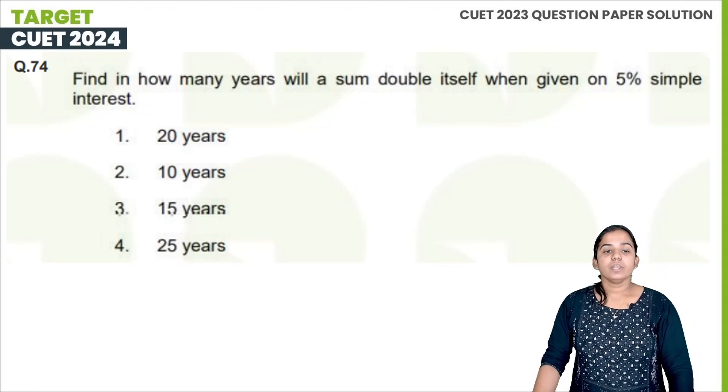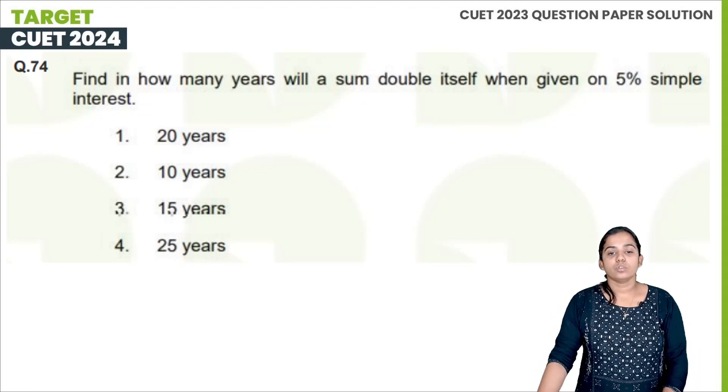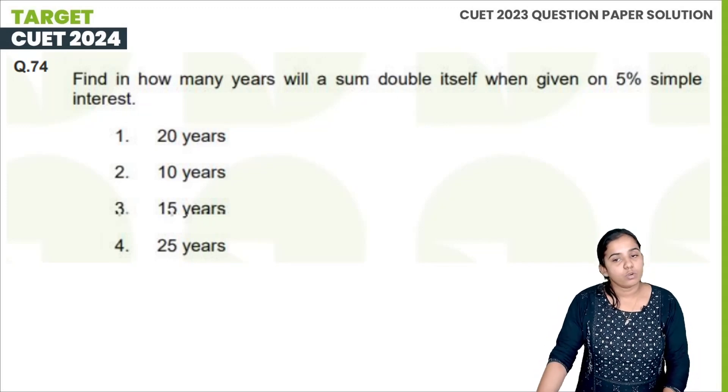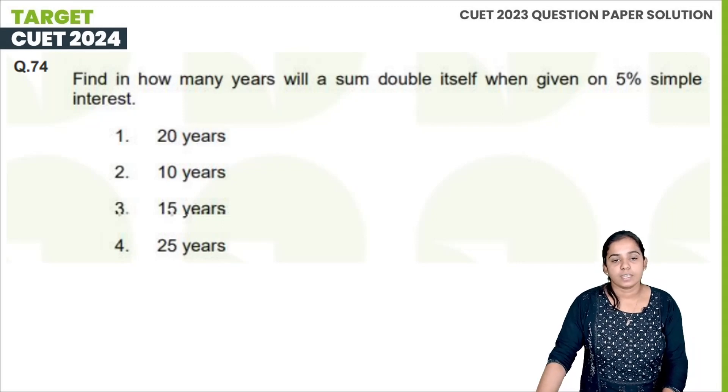Find how many years will a sum become double when given at 5% simple interest.